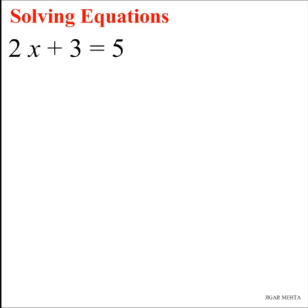Let's rewrite this equation indicating all the operations involved. So I have 2 times x plus 3 equals 5.